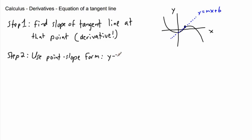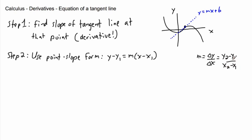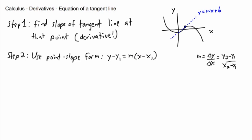Point-slope form goes like this: Y minus Y1 equals M times X minus X1. It comes from the definition of slope — M equals ΔY over ΔX, which is Y2 minus Y1 over X2 minus X1. If we call Y2 and X2 just Y and X, we can rearrange to get Y minus Y1 over X minus X1 equals M, and multiplying across gives us the point-slope form.